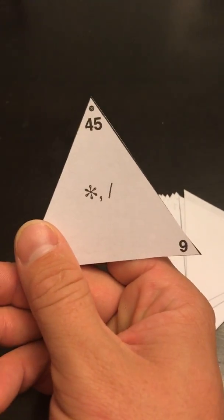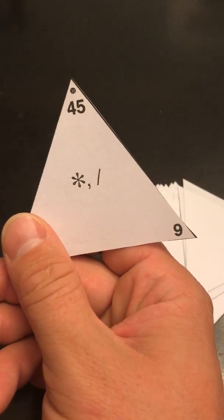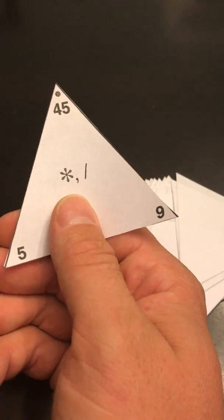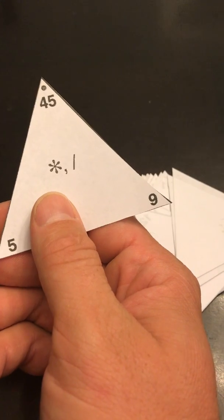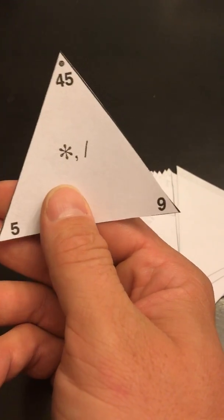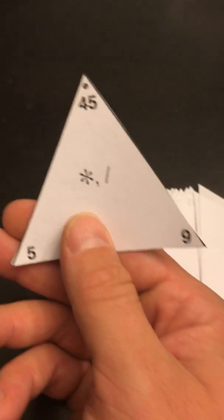Try another one. Here I've got 9 something 45, so I know the answer is 5. So 9 times 5 is 45, 5 times 9 is 45, 45 divided by 5 is 9, and 45 divided by 9 is 5.